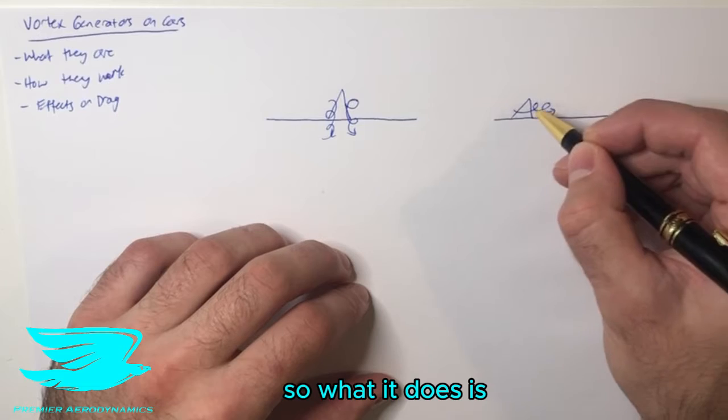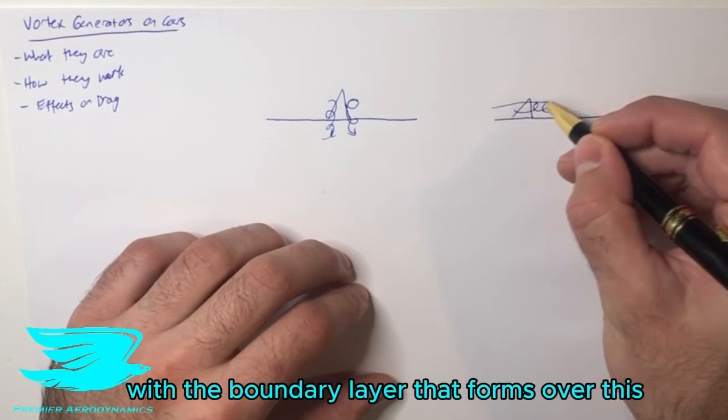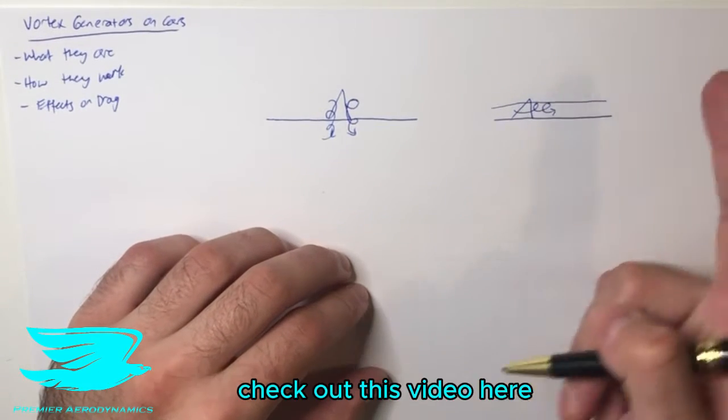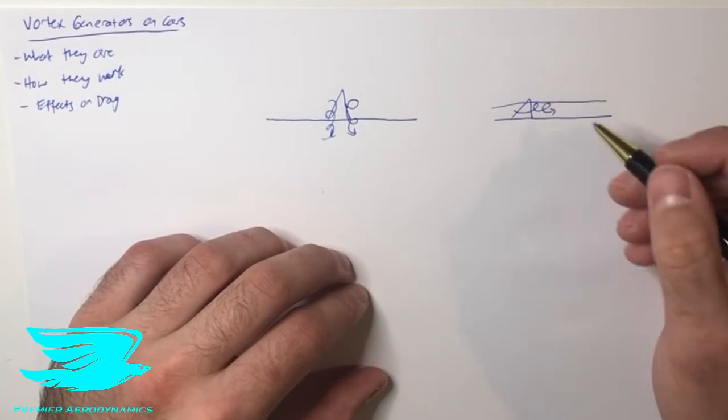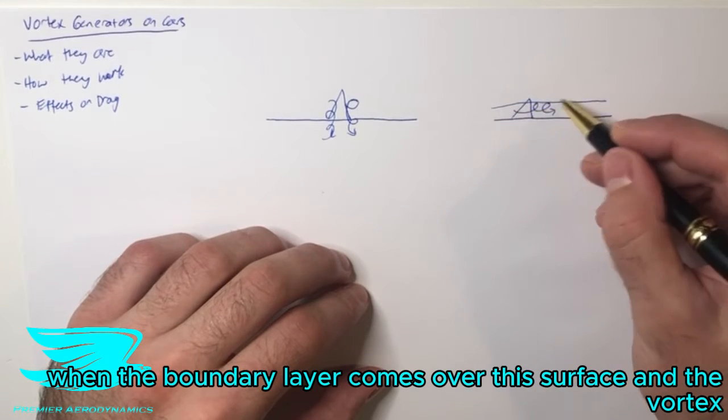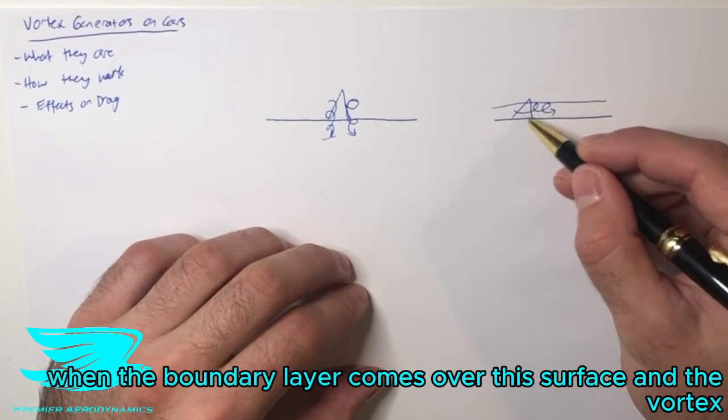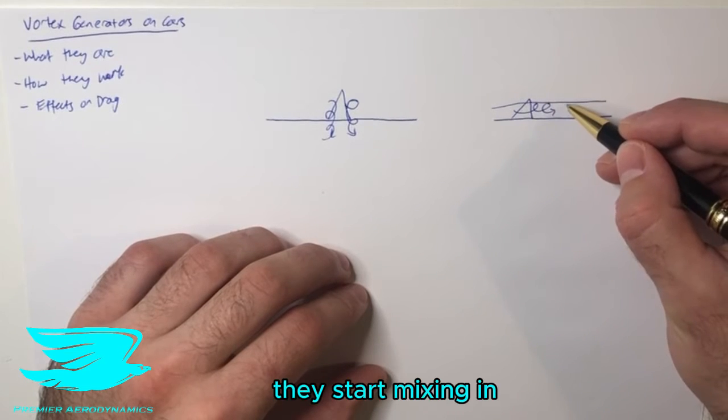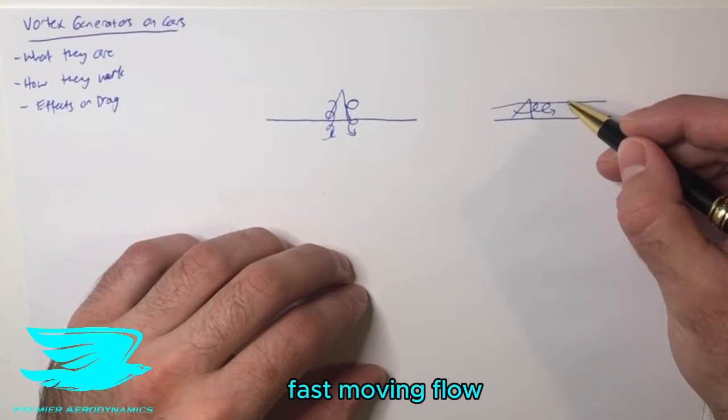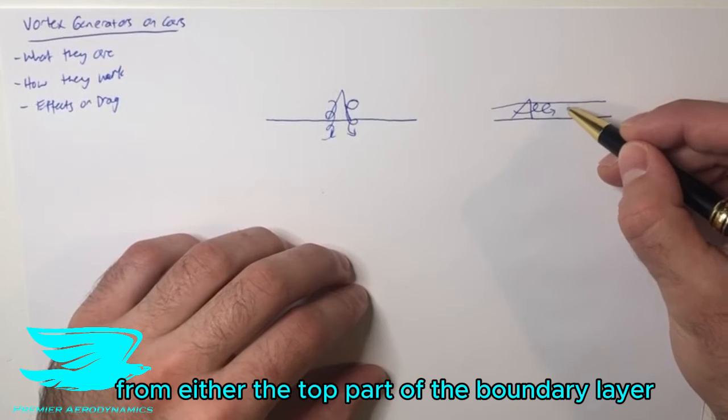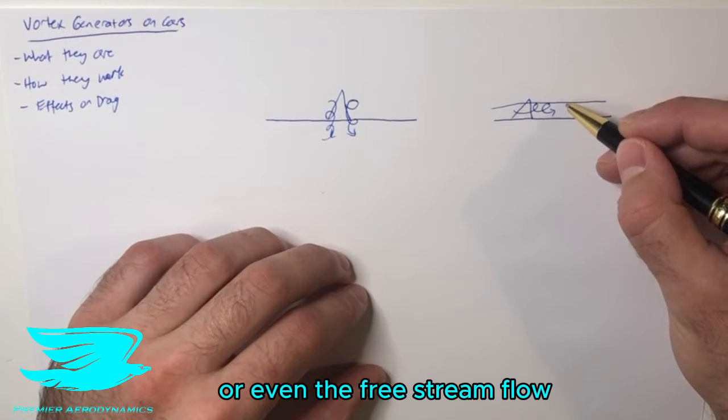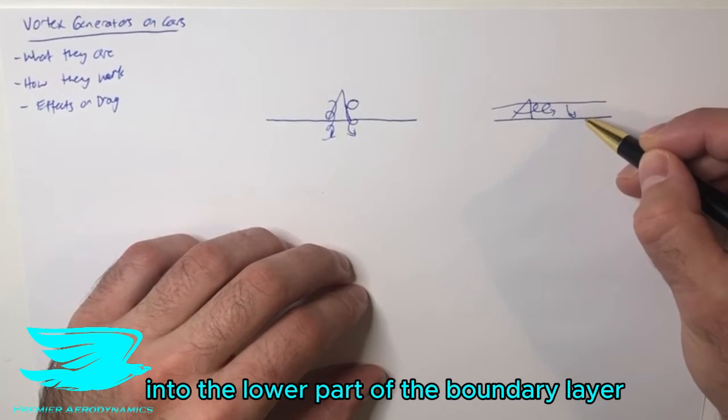So what it does is, with the boundary layer that forms over this—and if you don't know what boundary layers in aerodynamics are, check out this video here—when the boundary layer comes over this surface and the vortex generator, these vortices start mixing in higher, faster-moving flow from either the top part of the boundary layer or even the freestream flow into the lower part of the boundary layer.